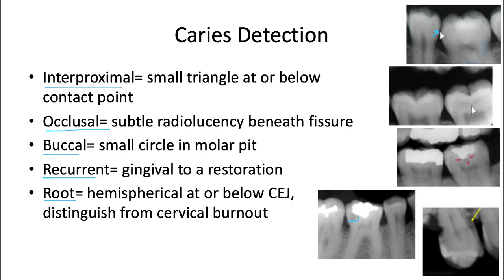For root caries, these are going to be hemispherical at or below the cemento-enamel junction. The root edge is going to appear to disappear and it's going to be hard to trace in the area of the caries lesion. Typically the lesion will also have diffuse, rounded inner borders. This can be easily confused with cervical burnout — a phenomenon caused by relatively low x-ray absorption on the mesial and distal surfaces of teeth right at the cemento-enamel junction.